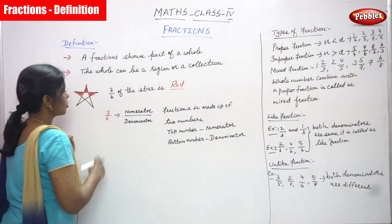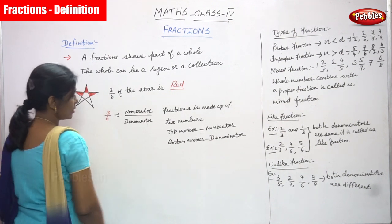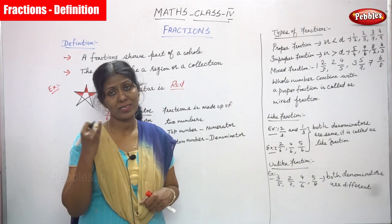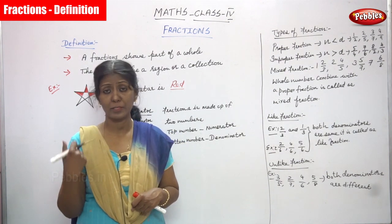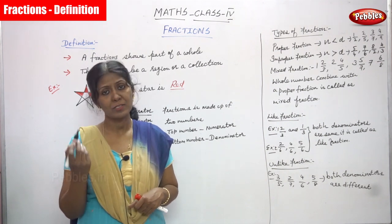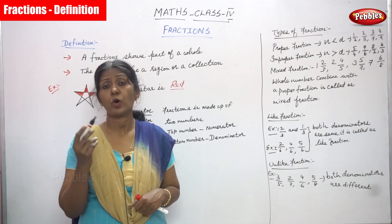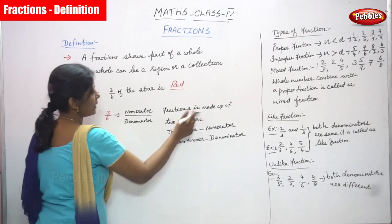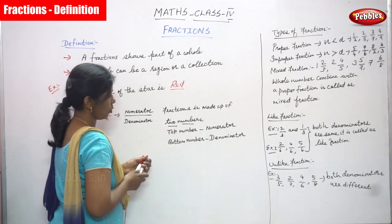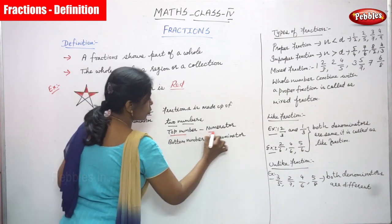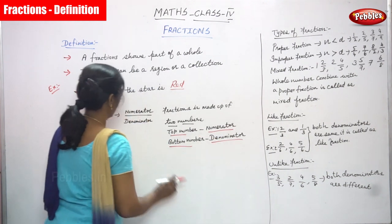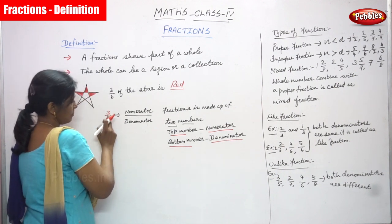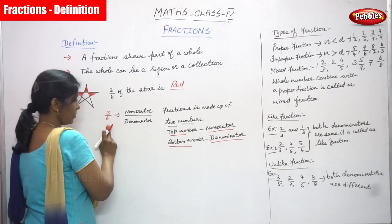It is a single star, so three by six — three is a numerator and six is a denominator. A fraction is made up of two numbers: one is a numerator and the other is a denominator. The top number is a numerator and the bottom number is a denominator. So 3 is the numerator and 6 is the denominator.